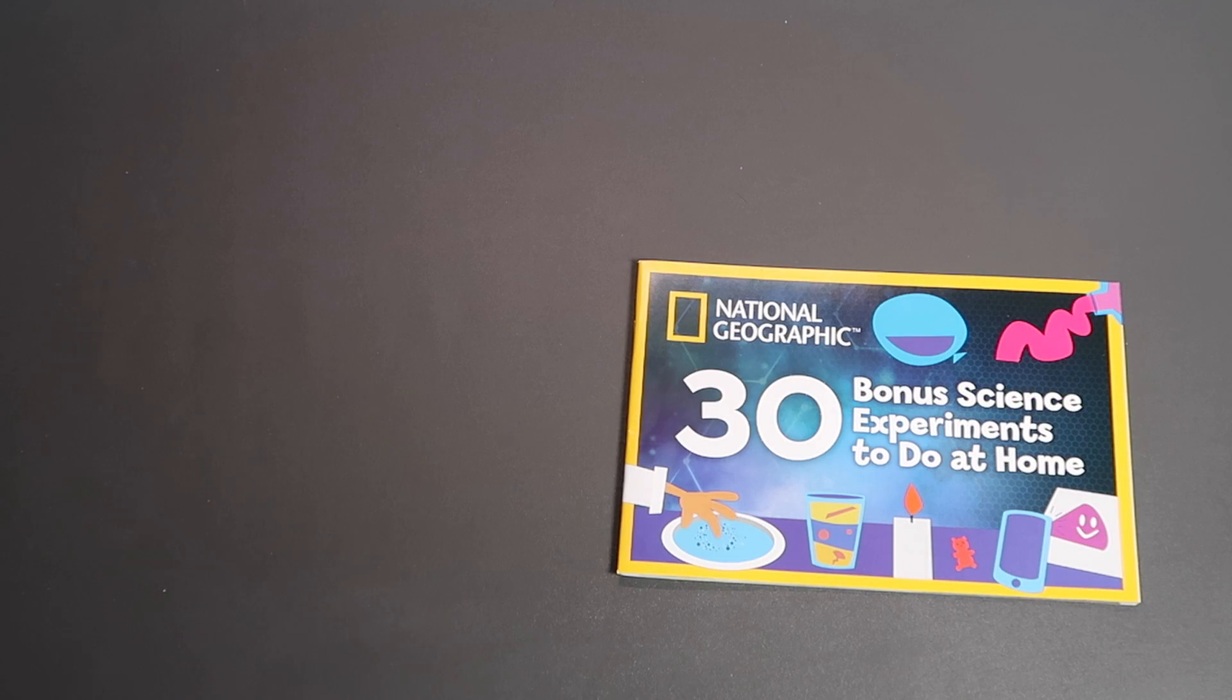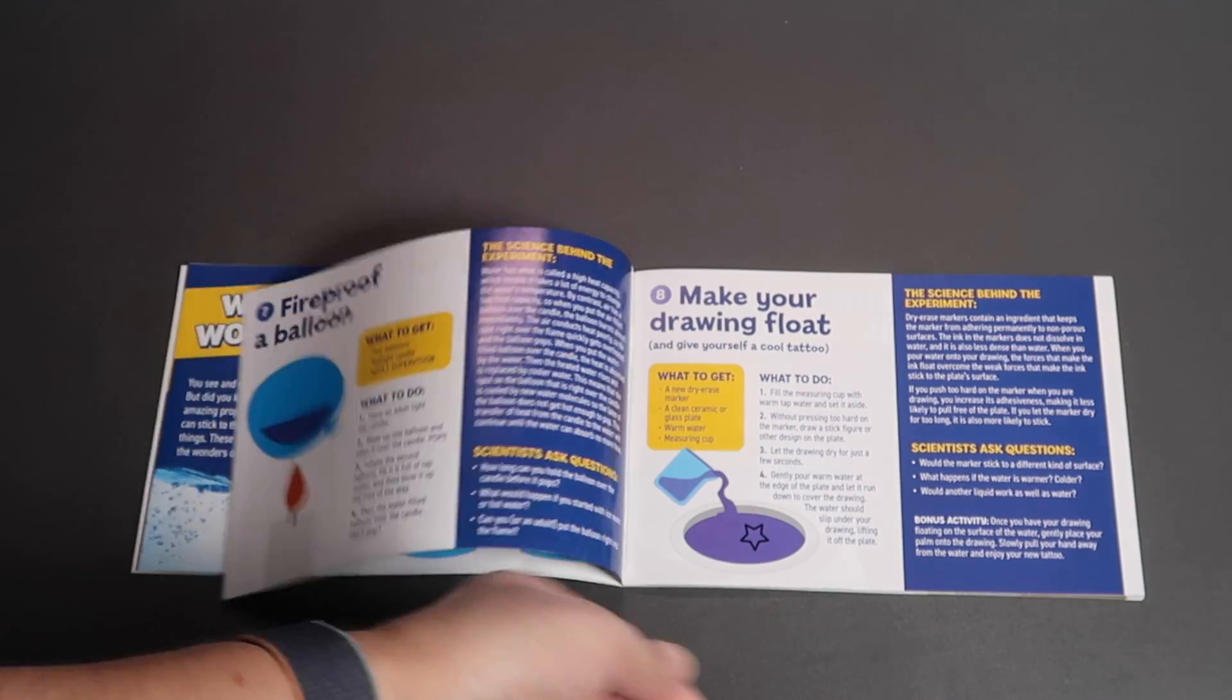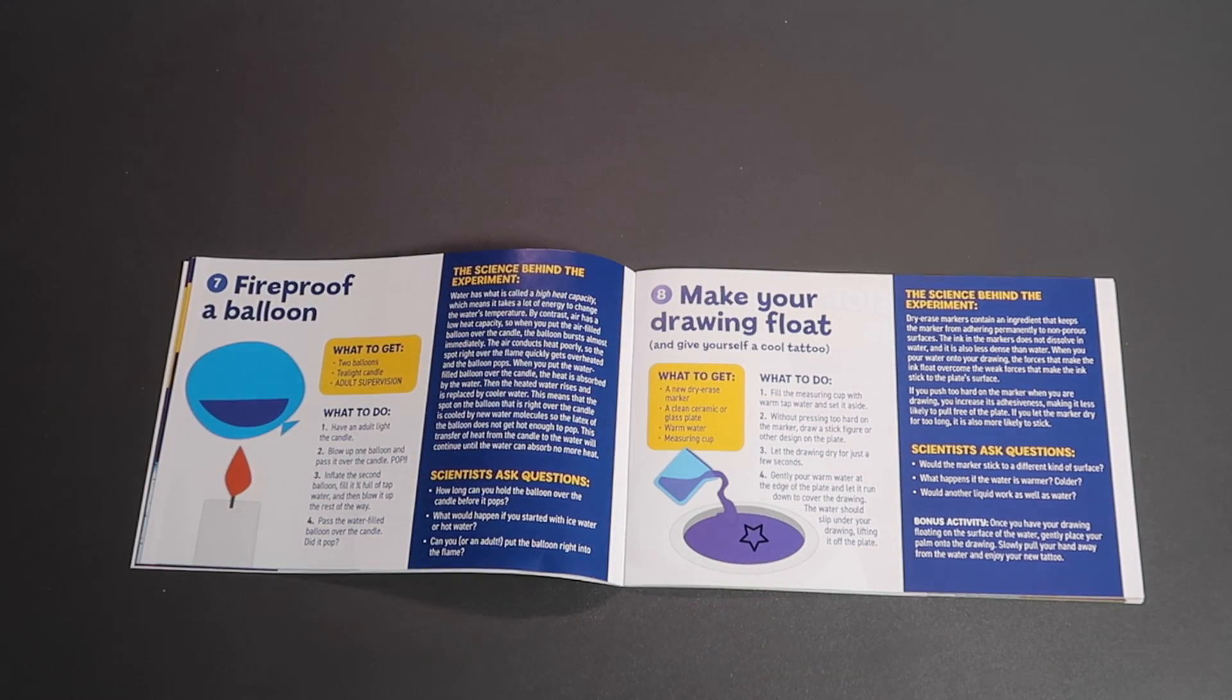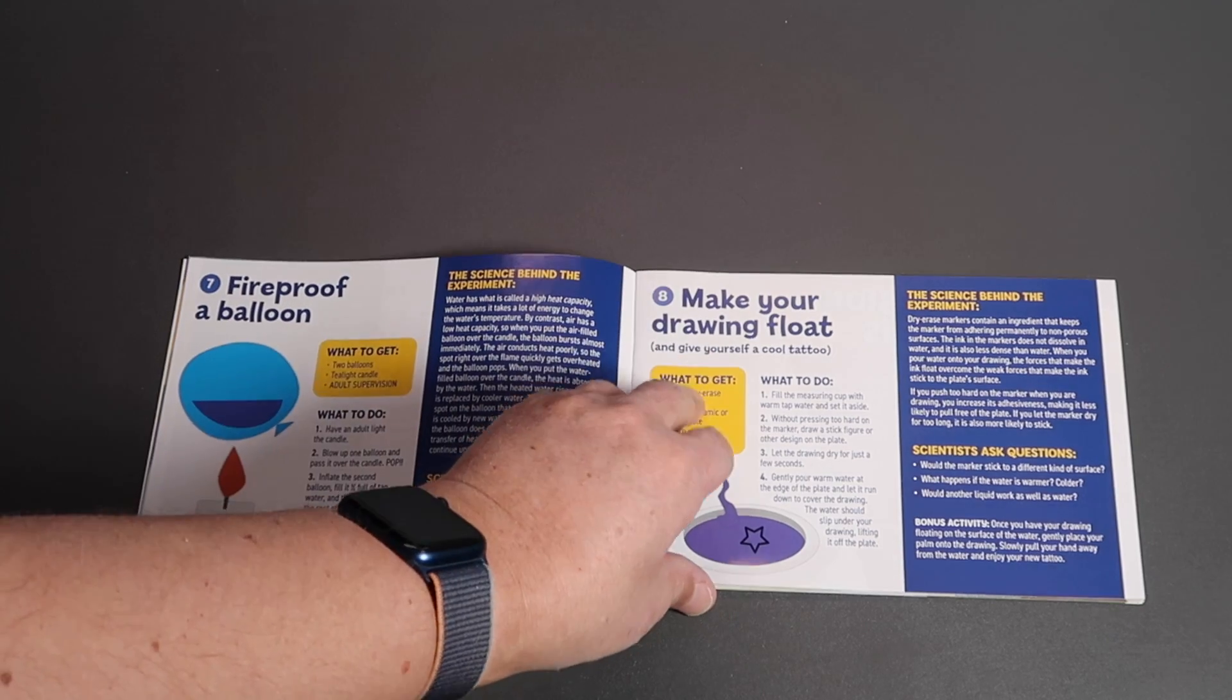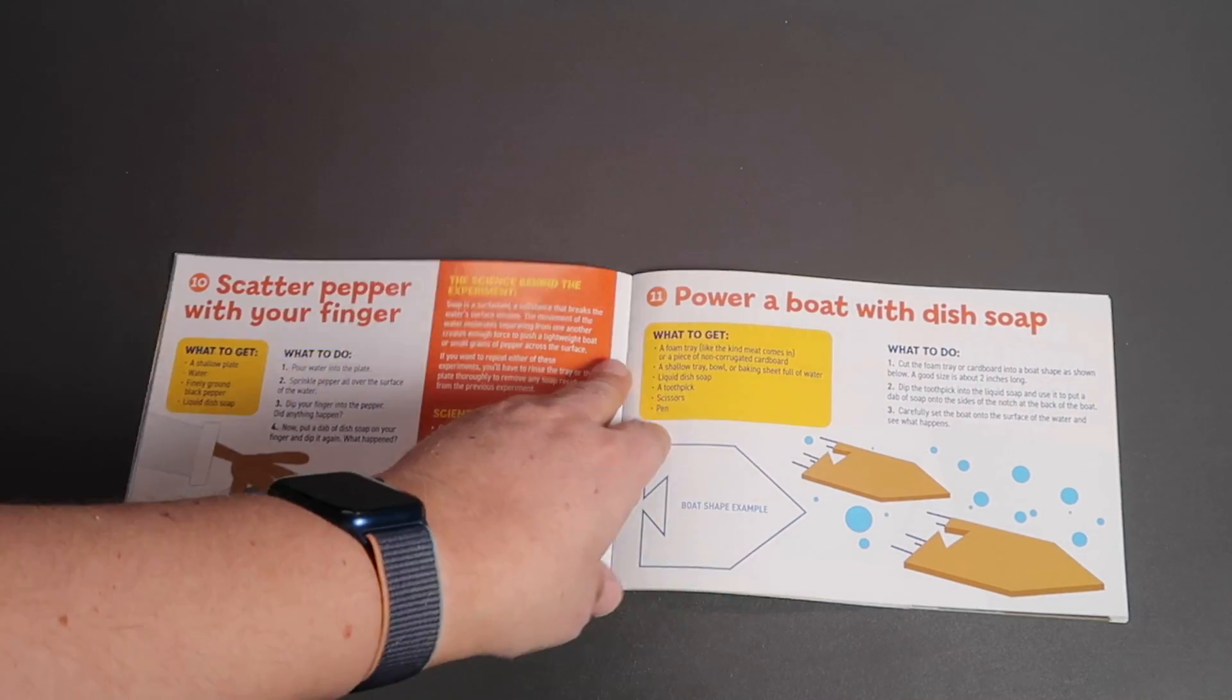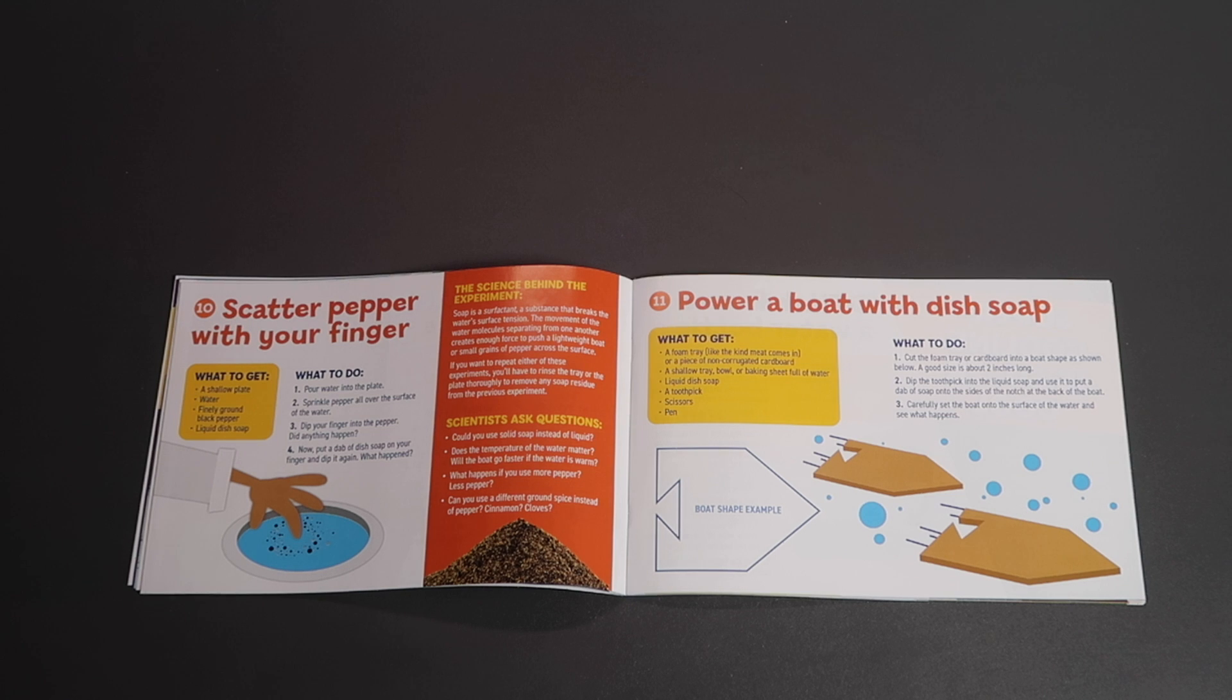On top of that, you get a bonus book, 30 bonus experiments to do at home. Very similar layout, full color instructions, the science behind the experiment. And it looks like there's some fun experiments in here. Many of these require equipment that's not provided in the kit.